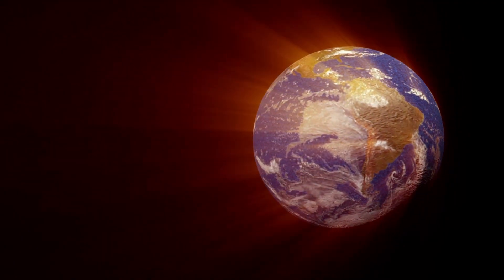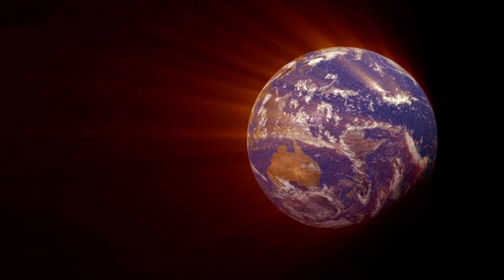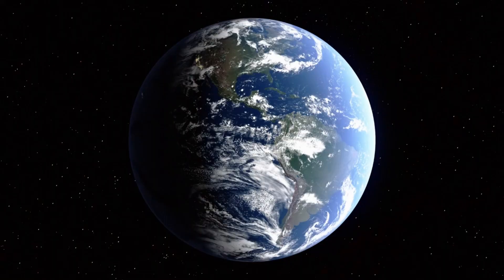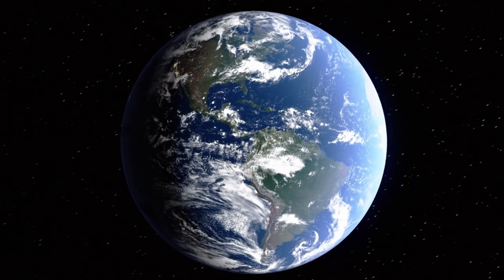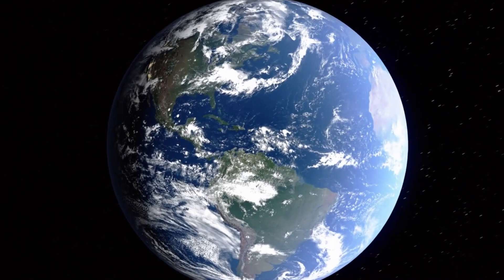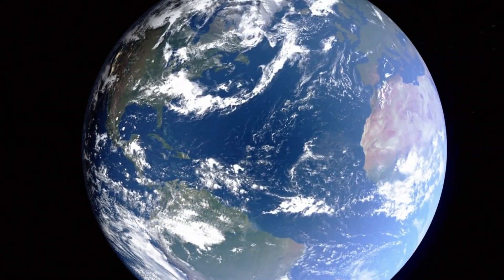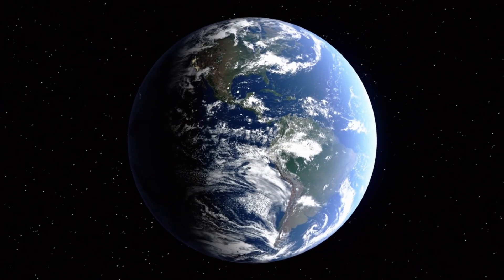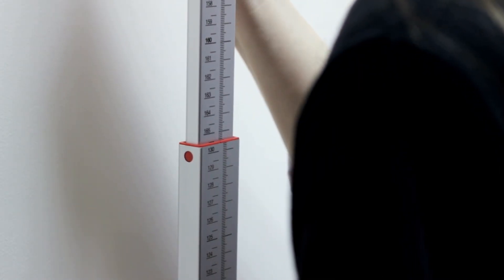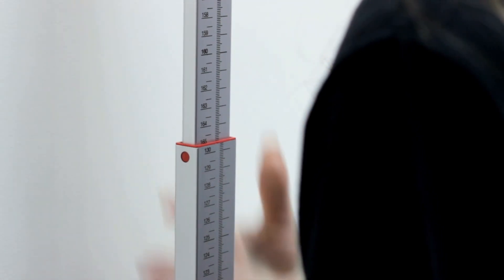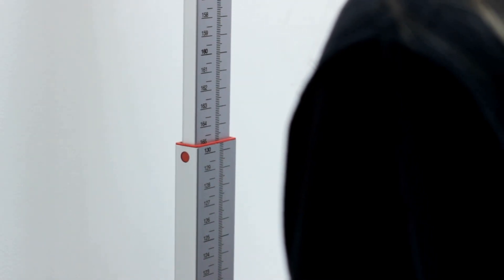Could we, as tiny humans, survive in such a scenario? There are several possibilities, depending on how Earth's newfound size would manifest. One potential scenario would be if Earth grew to the size of the Sun, but its mass remained the same. In this case, Earth would become a colossal planet, but with the mass of the relatively small Earth we know. This would have catastrophic consequences.